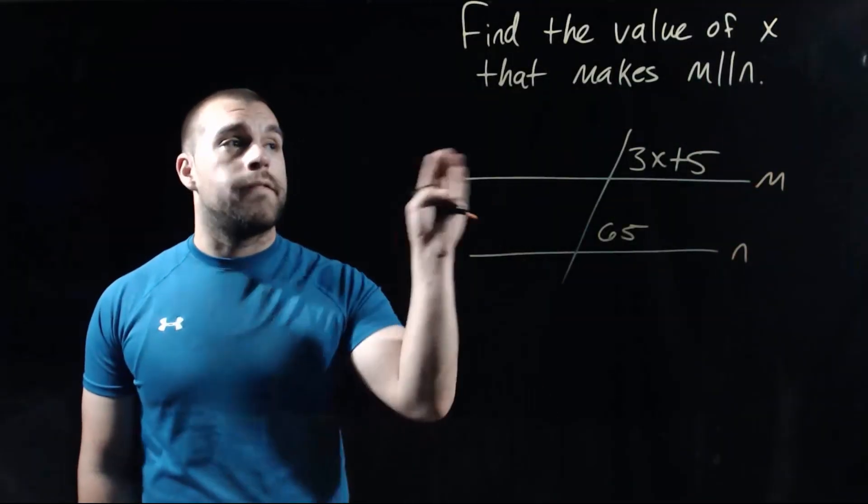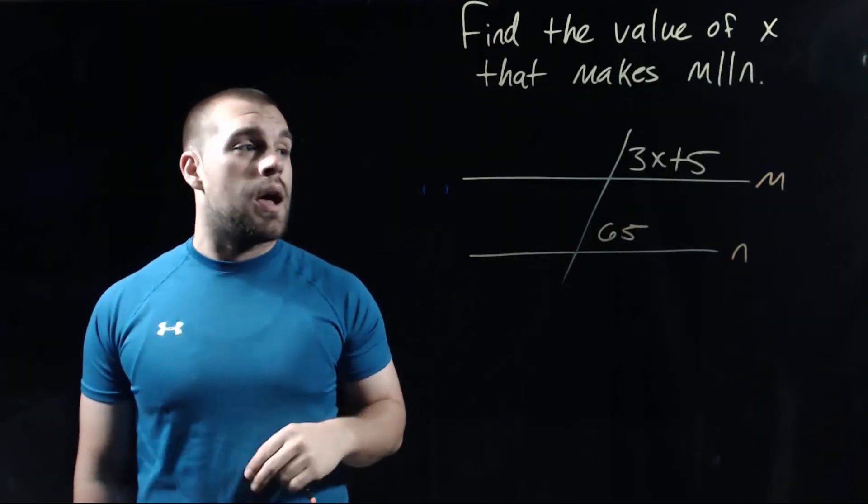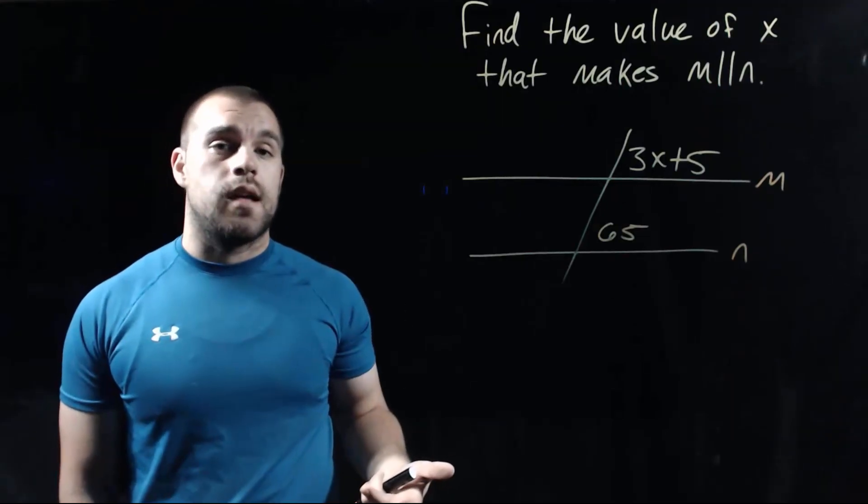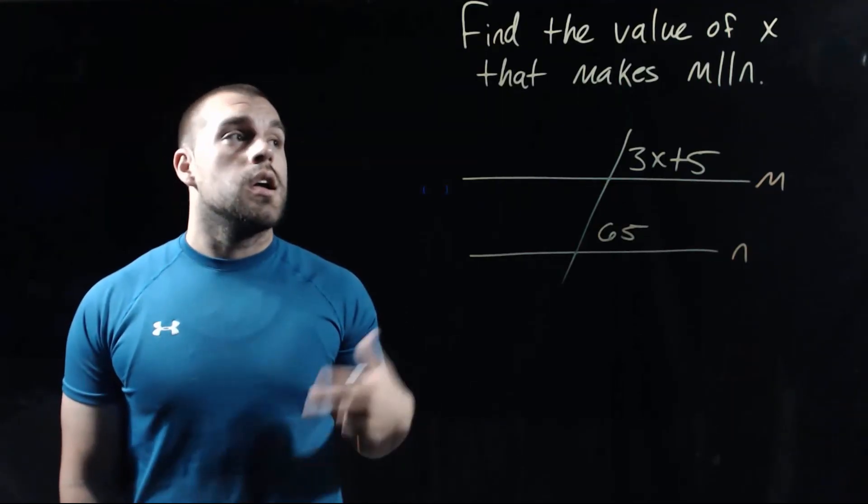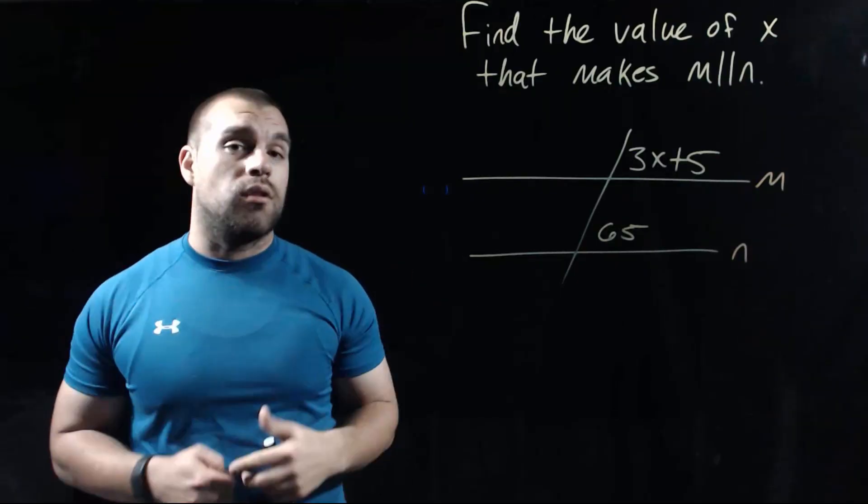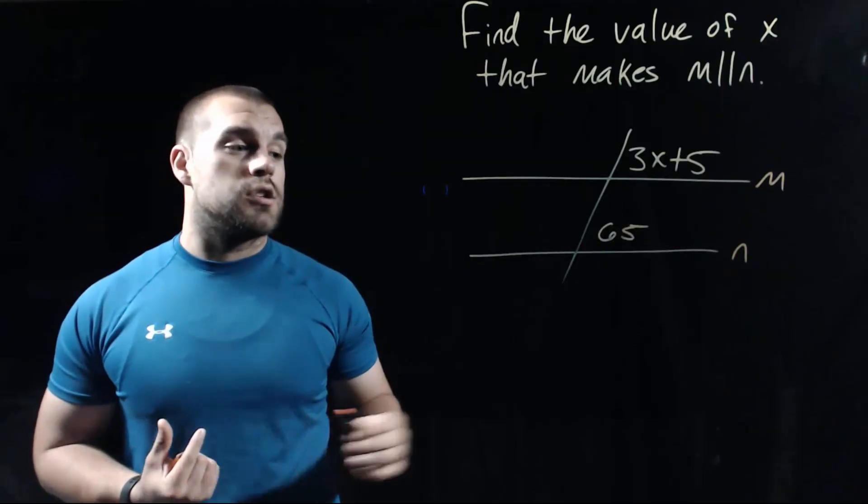In this example, we want to find the value of x that makes line m parallel to line n. So we're given a couple of angles to look at, and I would classify these angles as corresponding angles. In order for m to be parallel to n, we need these two angles to be the exact same size. So I'm going to take this information that we're given and set up an equation.